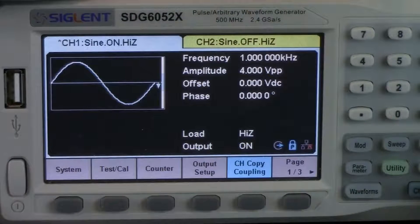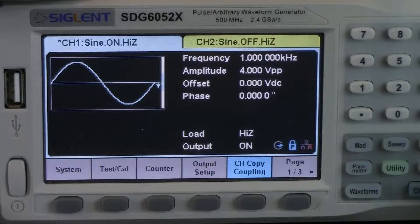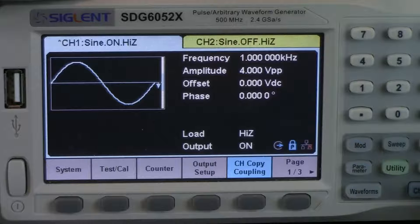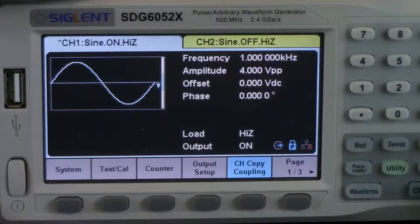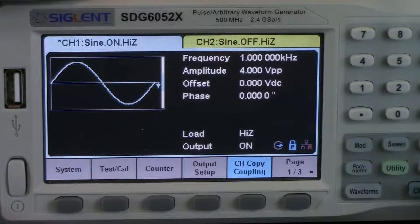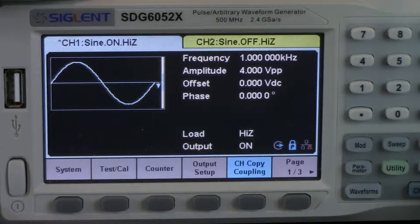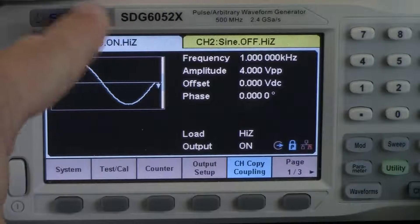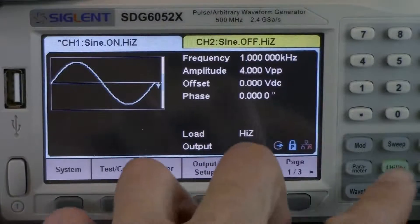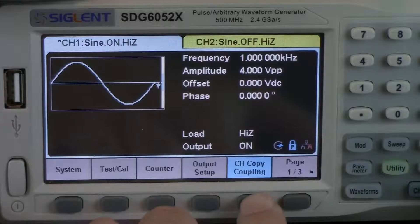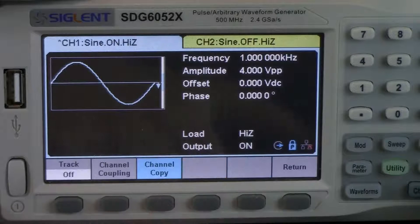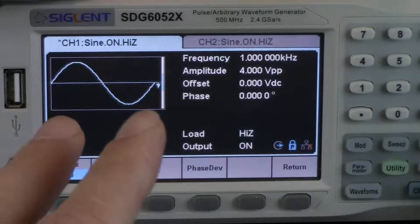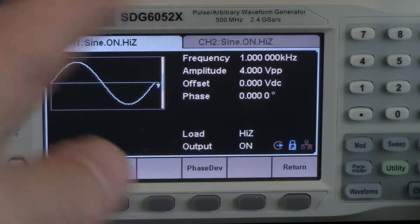Before we get everything going, we need to configure the SDG and we want channel 1 and channel 2 to track identically. And what that means is we want the function, the frequency, and the amplitude as well as the output on and off state to happen simultaneously. In order to do that, we can turn on the tracking method or the tracking mode for the SDG X, in this case the 6. So we're going to press the utility key, we're going to press channel copy coupling, and then we're going to turn on tracking. What that's going to do is now any command or any kind of configuration that we set up for channel 1 is going to be mimicked onto channel 2.